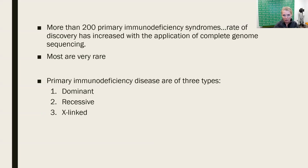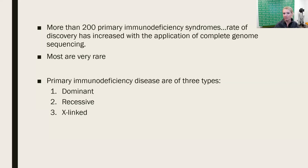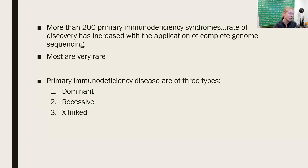Most of them, though, thank goodness, are very, very rare — where there may be only two people in the entire United States that might have it. That is good, but it also means there's probably not a lot of research being done on those extremely rare diseases. Primary immunodeficiencies, because they're inherited, can follow three different inheritance patterns: they can be dominant, they can be recessive, or they can be X-linked.